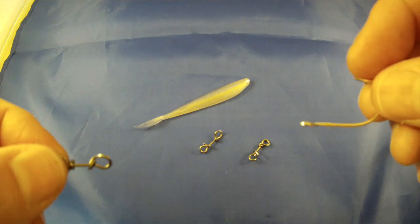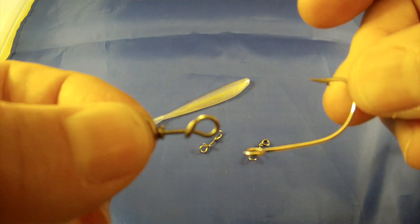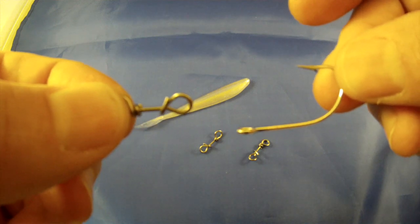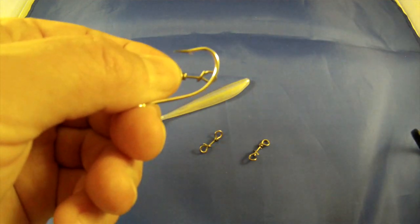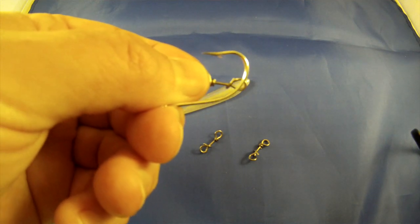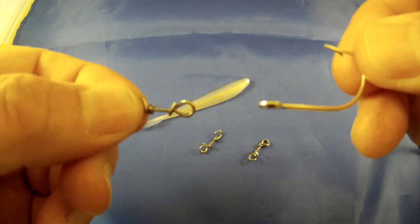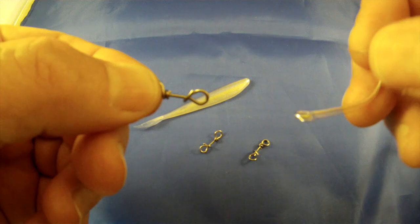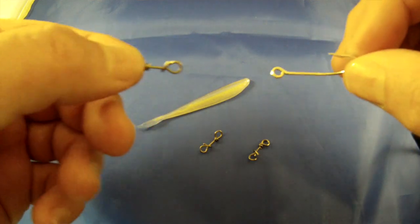So I'm using a stainless steel saltwater hook from Eagle Claw. This is a size 1-0, and the hook number from Eagle Claw is 254A as in Apple. It is stainless steel, you can pretty much use any kind of hook you want.